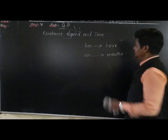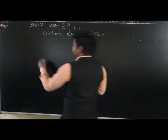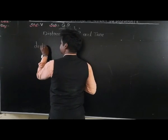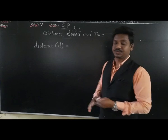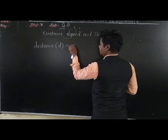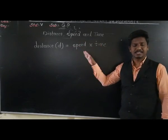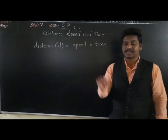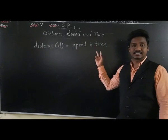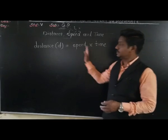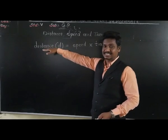There are three formulae we must memorise. Distance is equal to speed multiplied by time. If speed and time are given, we multiply them to find distance. The three terms are distance, speed and time. Basic formula: Distance = Speed × Time.